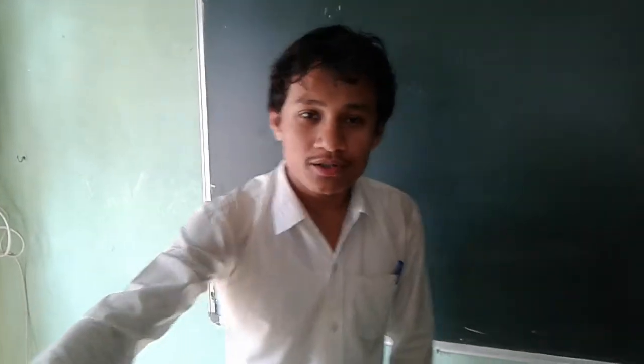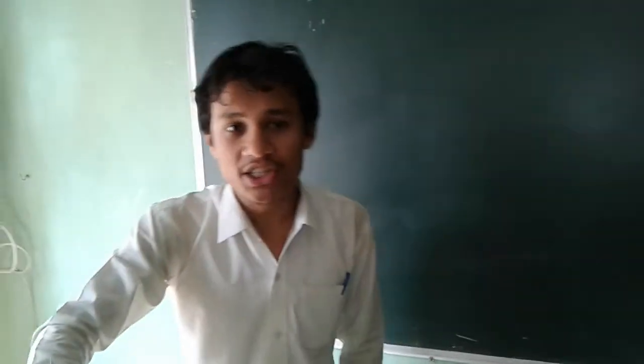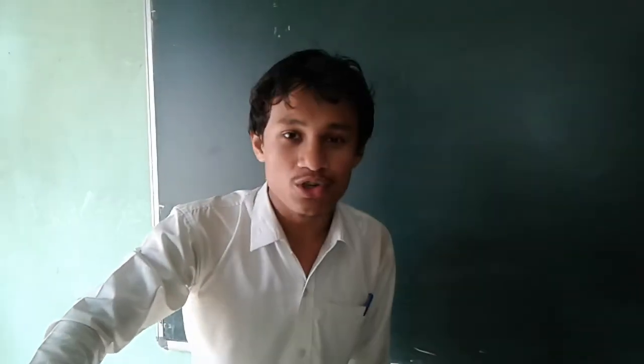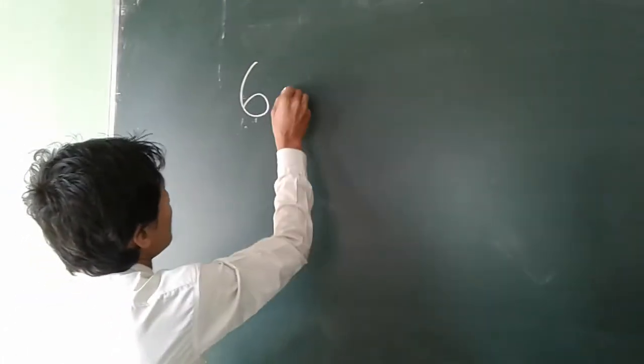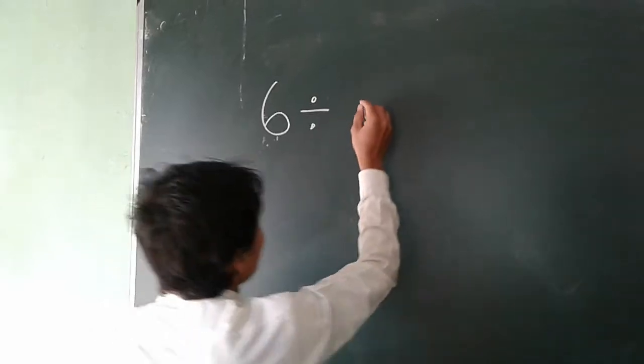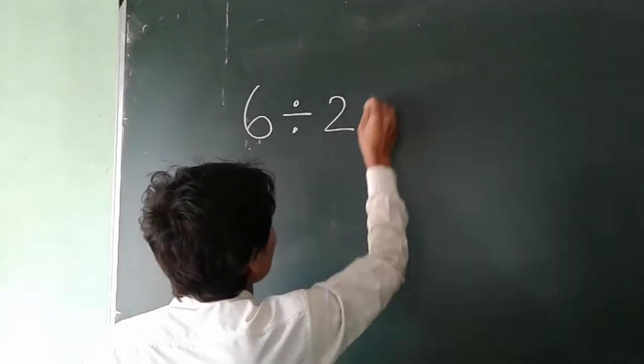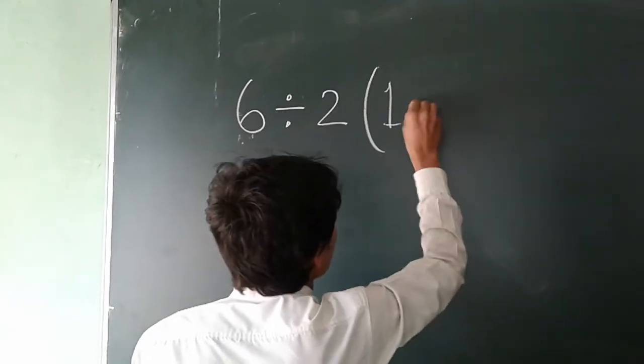A very recent viral problem has turned out about simplification for primary classes, based on class 5. Actually, the problem structure is like this: the simplification should be done for 6 divided by 2 within the brackets 1 plus 2.